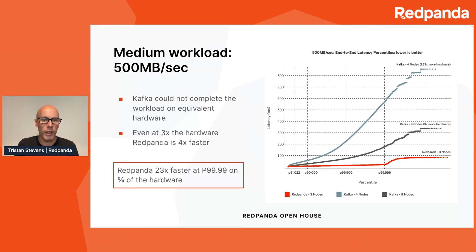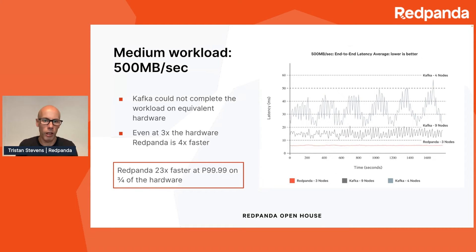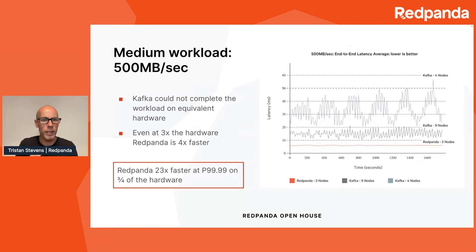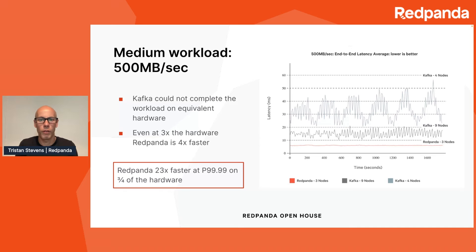Let's also look at the average latency. Redpanda on the red line is very stable at the average, which is what you'd expect. With Kafka you get a really spiky average line. On the smaller four-node cluster you get a cyclic effect, which we believe is due to page cache eviction and the Java virtual machine. Even with the bigger cluster you've still got a very spiky profile bouncing around quite a lot. It's due to Redpanda's focus on performance that you get a very consistent latency line even on your average, as well as the tail latencies.